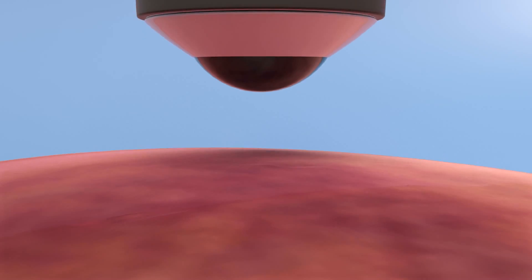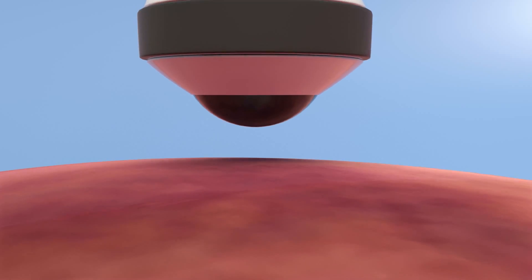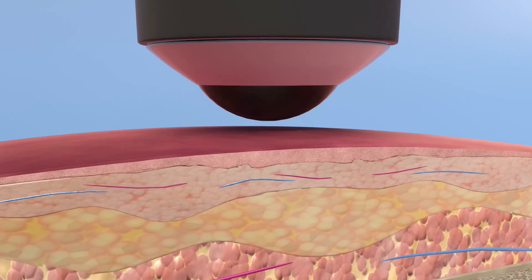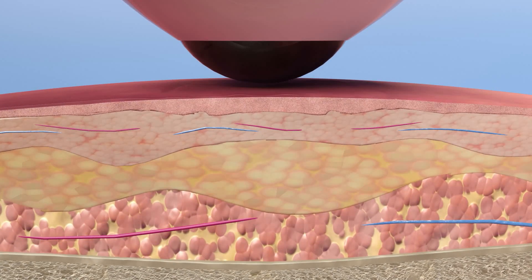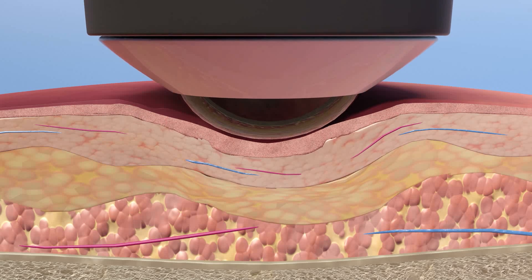Laser therapy uses a process called photobiomodulation to change the condition of damaged tissue by stimulating cellular metabolism, thereby accelerating the healing process. A large convex treatment head can be used to compress superficial tissues, displacing excess fluid, and enhancing laser penetration to deep structures.